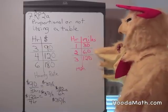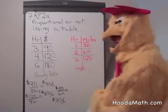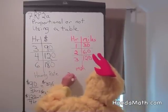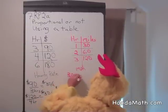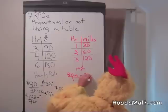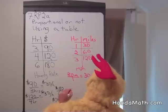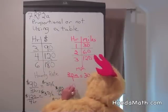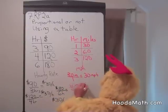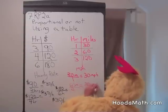Are each of these facts proportional? Well, let's try. In the first hour, she traveled 30 miles in 1 hour. So her unit rate is 30 miles per hour — that means her average speed is 30 miles per hour. After 2 hours, she has traveled 60 miles in 2 hours, so her unit rate, or velocity, is 30 miles per hour.